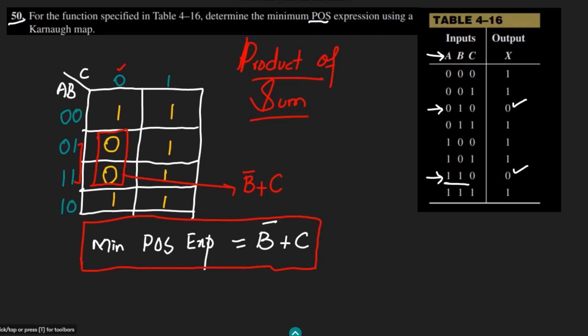This is the answer to question 50. We have seen how to find the minimum product of sum expression from the truth tables. That is it for today, in which I have shown you all the steps we have to perform in order to find the minimum POS expression. Try...